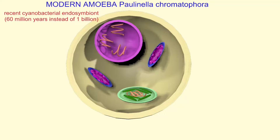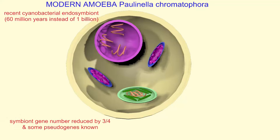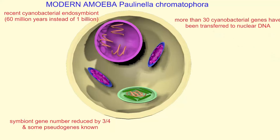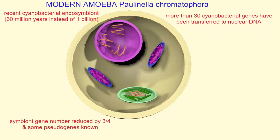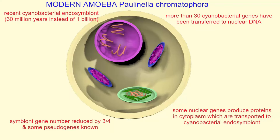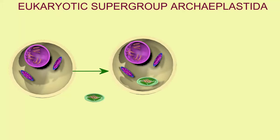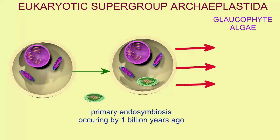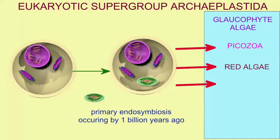Many proteins produced in the cytoplasm are transported to the chloroplast because they include a target sequence of amino acids identifying the chloroplast as their destination. Interestingly, there is a modern amoeba which seems to be going through the early process of converting a cyanobacterium into an organelle like a chloroplast. This recent endosymbiosis is estimated to have occurred 60 million years ago. The symbiont has already reduced its chromosome genes by about three-quarters, some are non-functional pseudogenes, and more than 30 original cyanobacterial genes have been transferred to the nucleus, with some producing proteins in the cytoplasm transported back to the endosymbiont. This seems to be a good model for how an ancient amoeba began transforming a cyanobacterial endosymbiont into the chloroplast of red algae, green algae, and land plants.